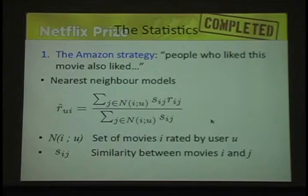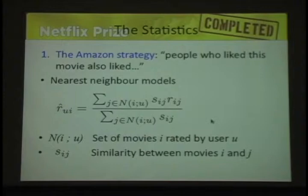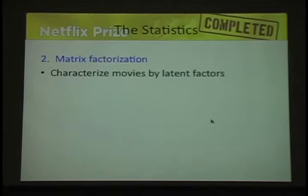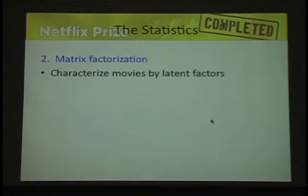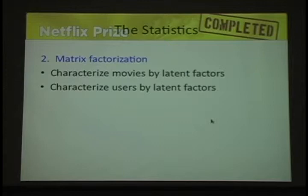Another thing they used was matrix factorization — characterizing movies by latent factors. We don't have data on these factors: some movies are very violent, some have Meryl Streep, some are long or short, old or new. But you might think there's enough information in this enormous database to get at some of those ideas even if they're hidden. Some users are very critical, some like all kinds of movies — these are the sorts of things we're trying to assess with latent factors.